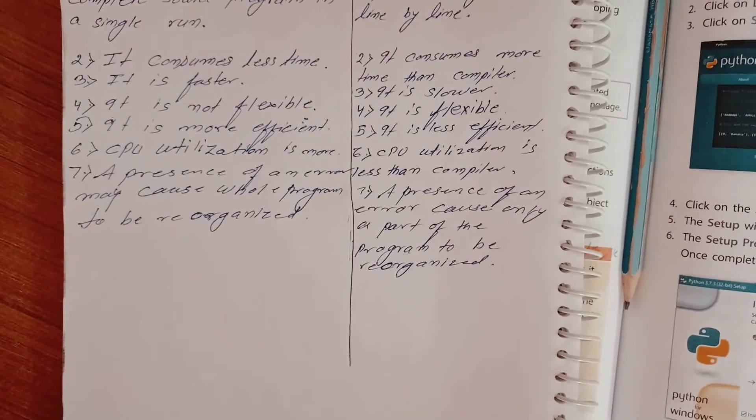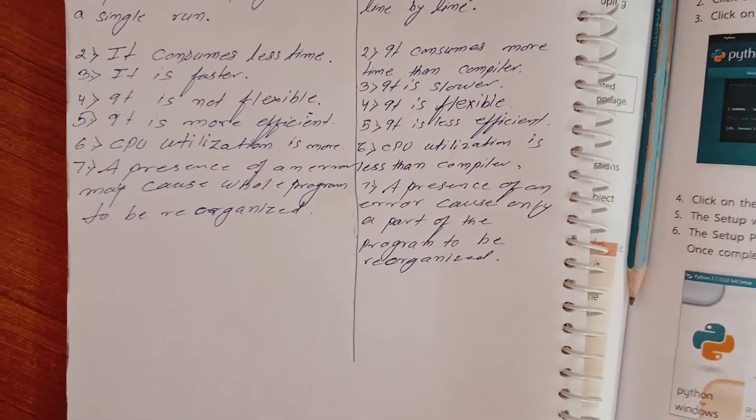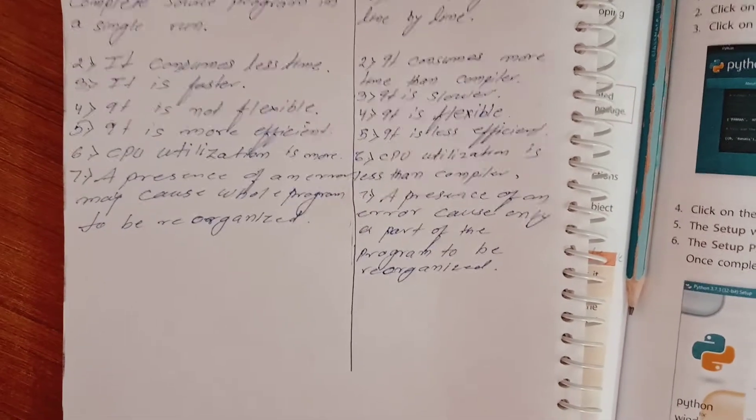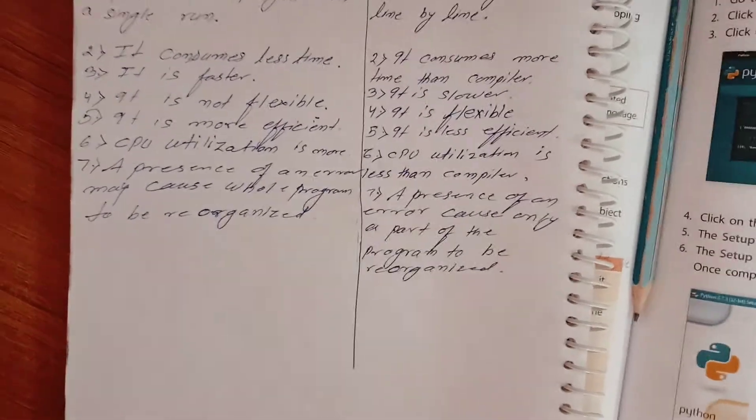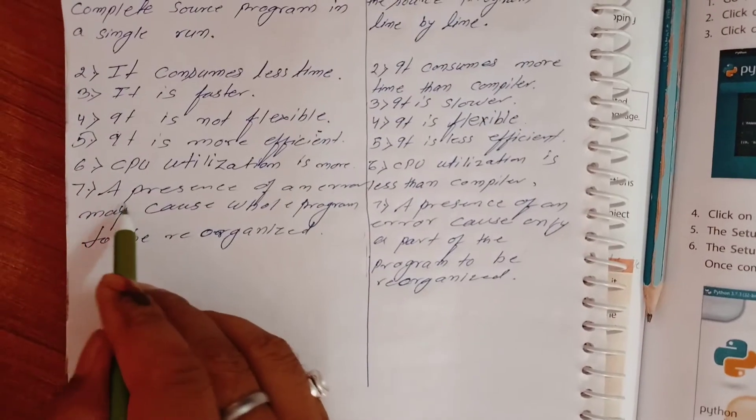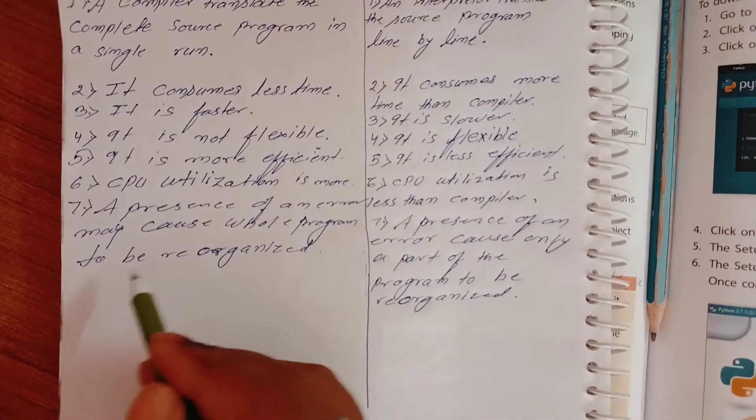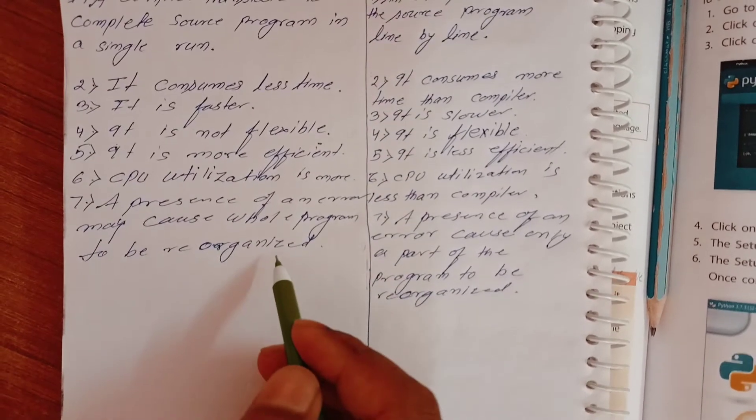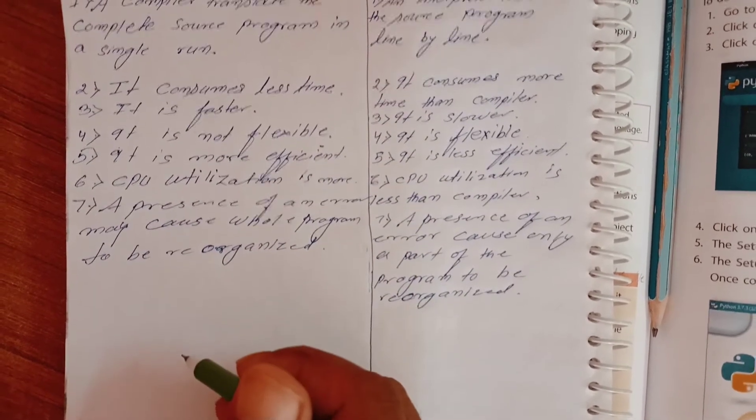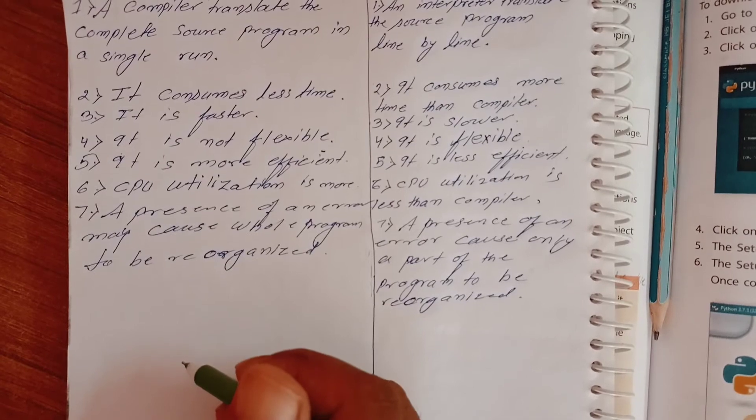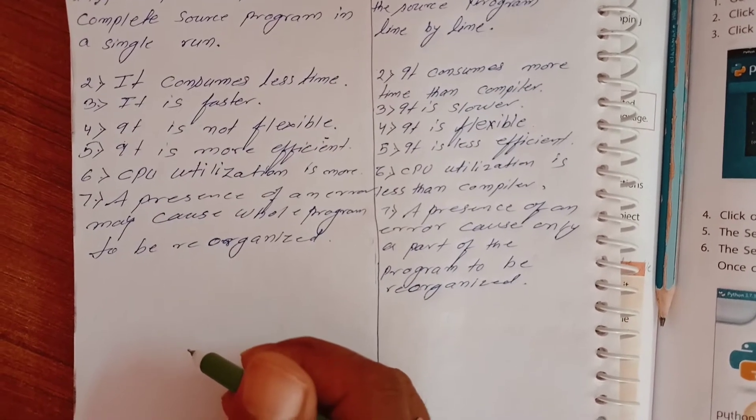So seventh point: presence of an error may cause whole program to be recognized. This means after writing the complete program, during run time, compiler generates error if any error in program.